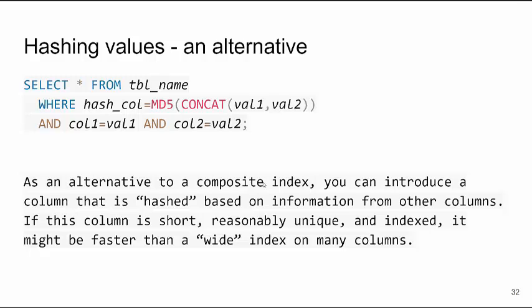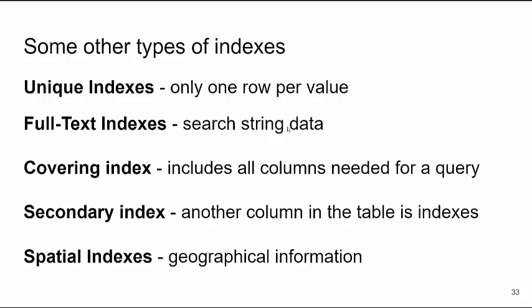If you have complex string and number combinations, like a sub-assembly ID for cars, you can actually make a hash of the values and use that for an index. Other types of indexes: unique indexes — where every value in the column is unique, highly recommended. Full-text searches if you're searching through strings. Covering index — where all the information your query needs is actually held in the index, so it doesn't dive into the data. Secondary indexes piggyback on the primary index pointer. Spatial indexes are for geographical information. Functional indexes — you can actually make an index out of a function, such as taking the absolute value of a column.